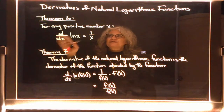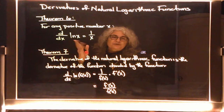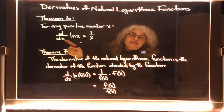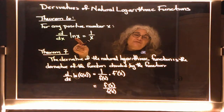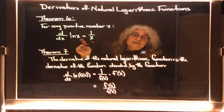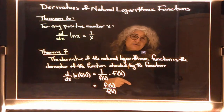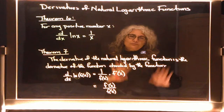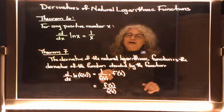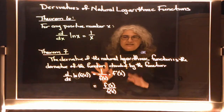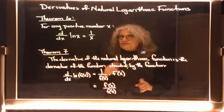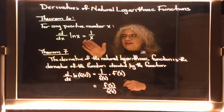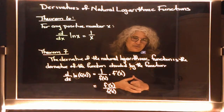The first theorem — Theorem 6 — states that for any positive number x, if I'm taking the derivative of a natural log function of x, the derivative is 1 over x. There's a whole theorem behind that involving taking the limit of the difference quotient, but we're not going to go through all that.